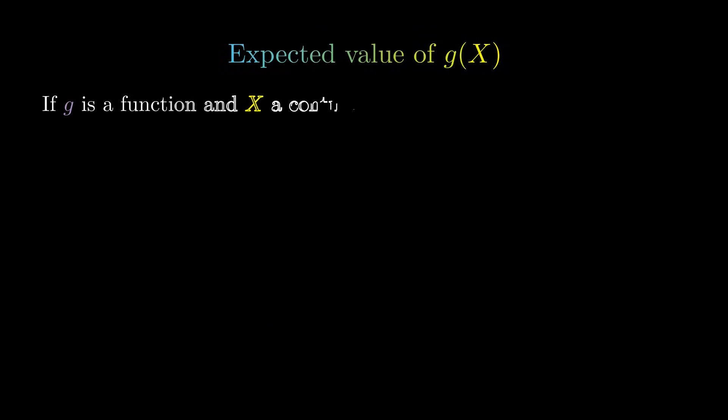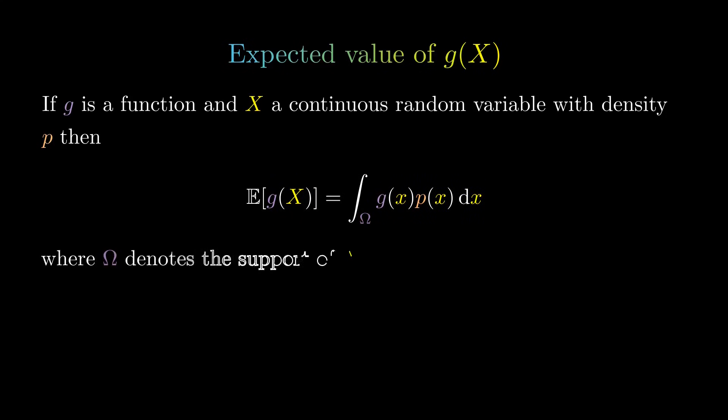If G is a function and X is a continuous random variable with density P, then, by definition, the expected value of G applied to X is equal to the following integral over the support of X, provided it converges absolutely.